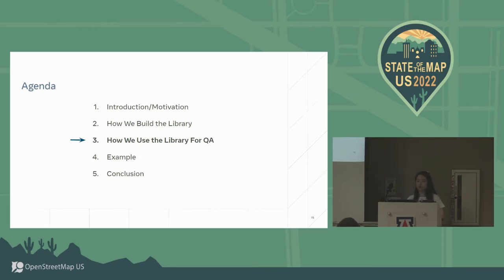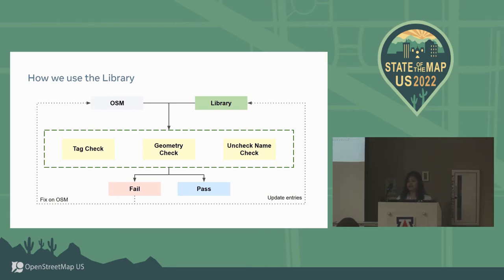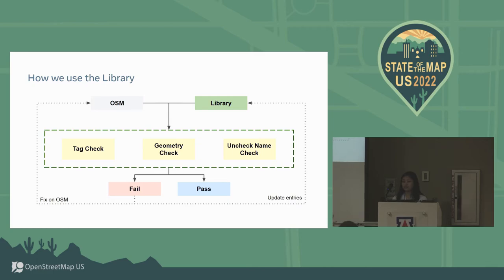I'll pass to Charmaine to go over how we use the library for QA. To ensure that prominent map features are correct and safe to display, we created a vandalism detection pipeline. First, we compare an OSM planet file with the library and run three checks: tag, geometry, and unchecked name check. It outputs success and failure results. Once we have that, we review failures manually — if discrepancies are vandalism or incorrect, we fix them in live OSM. But if there's a good update from OSM, then we update the library.